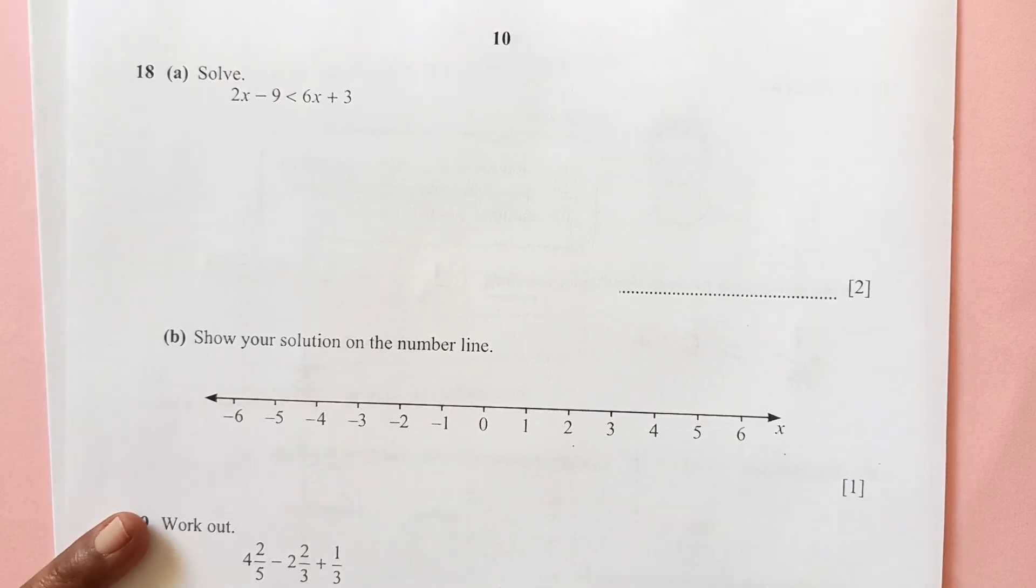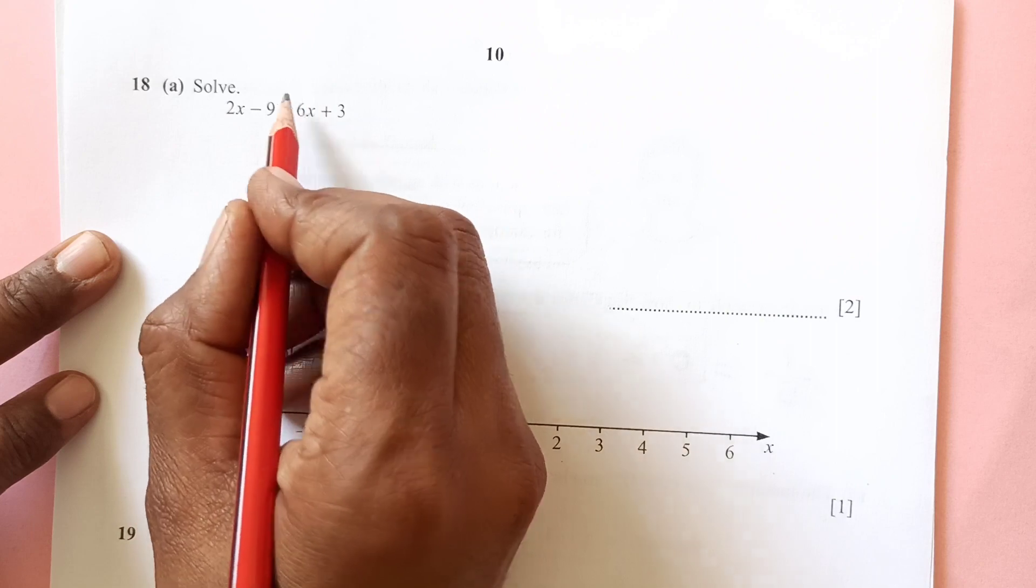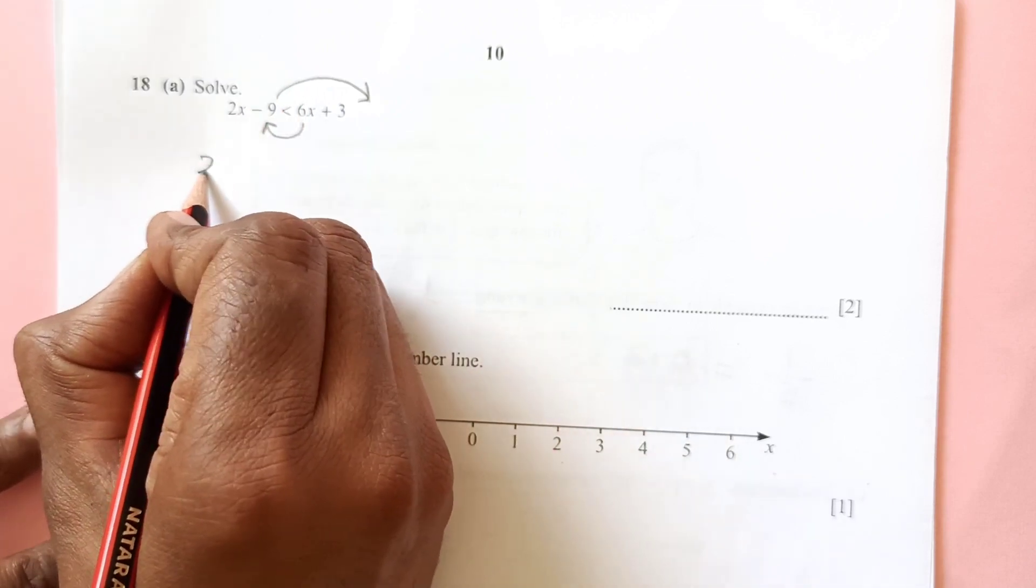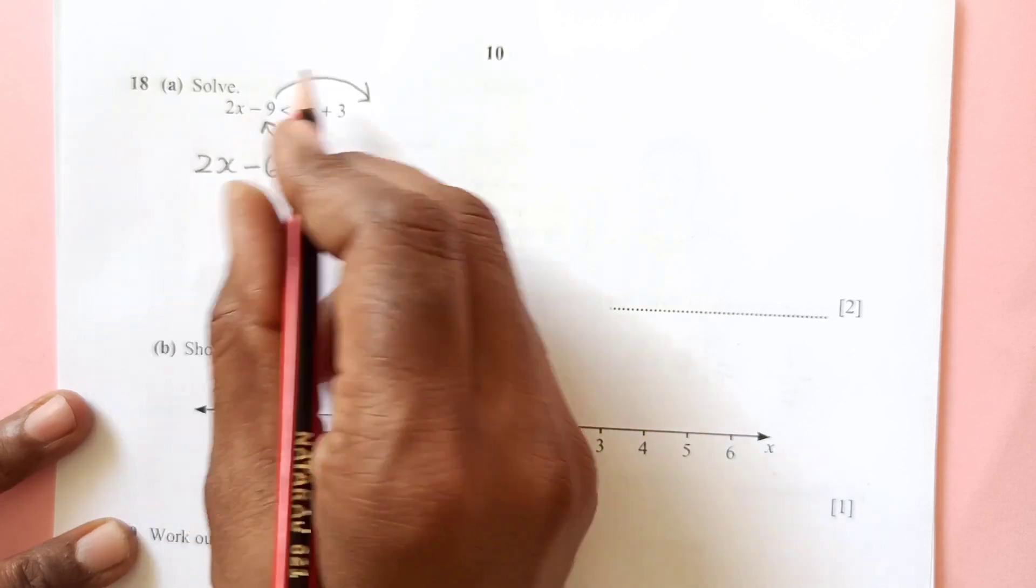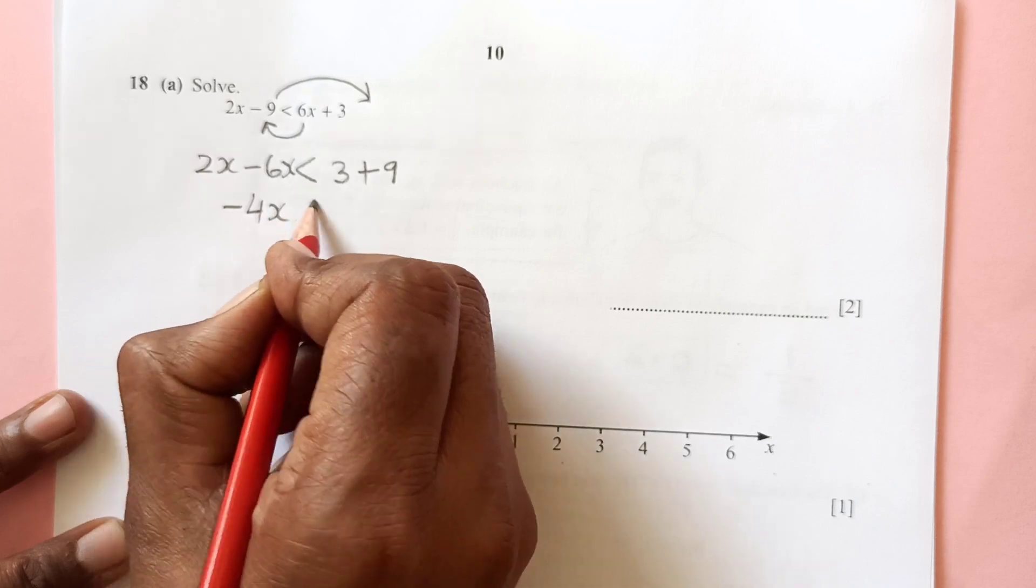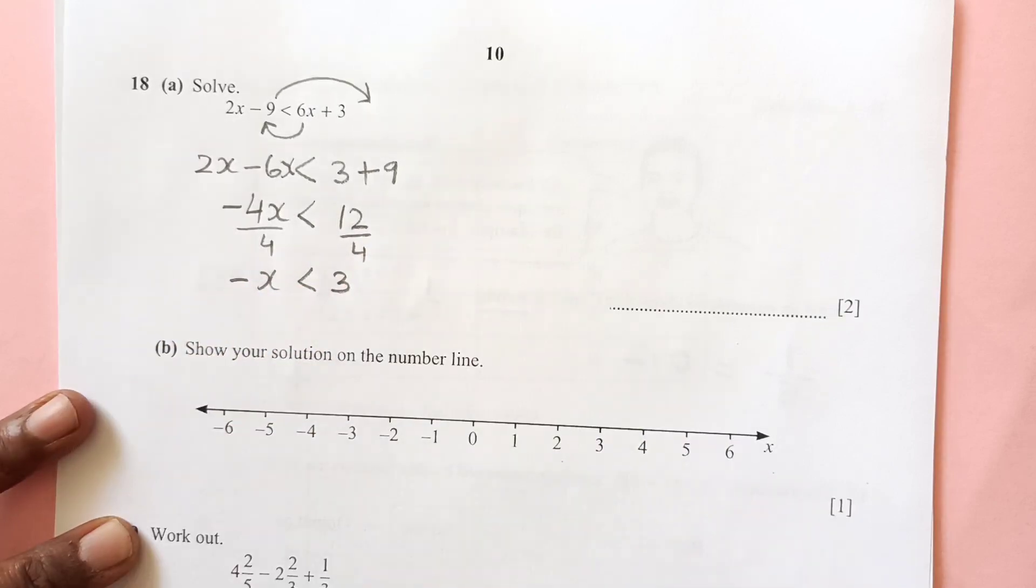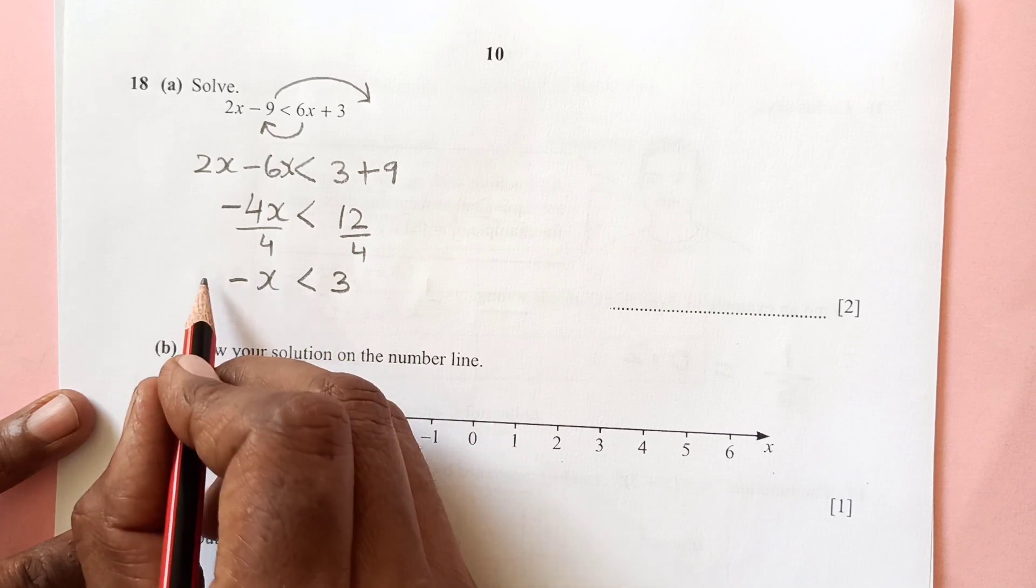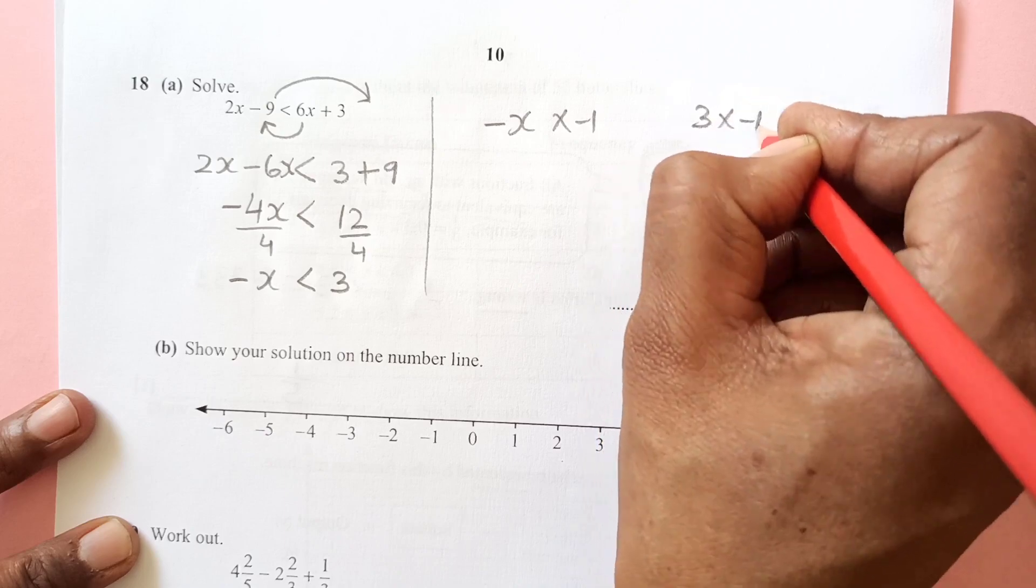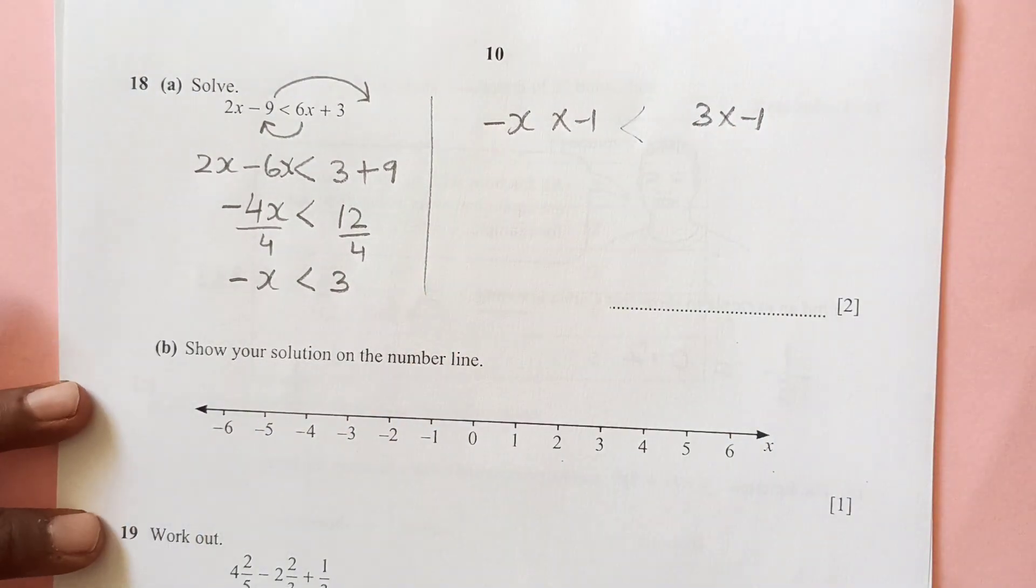Number 18: we have an inequality here. Solve this one. We have 2x minus 9 less than 6x plus 3. We shift constants to the other side and bring x to the other side. 2x minus 6x less than 3 plus 9. 2x minus 6x is minus 4x is less than 12. Now divide it by 4, so you have negative x is less than 3. But we need the value of x. So multiply both sides by negative 1. Negative x times negative 1, and 3 times negative 1. Now this sign is going to change. This will become x greater than minus 3. So the answer is x greater than minus 3.